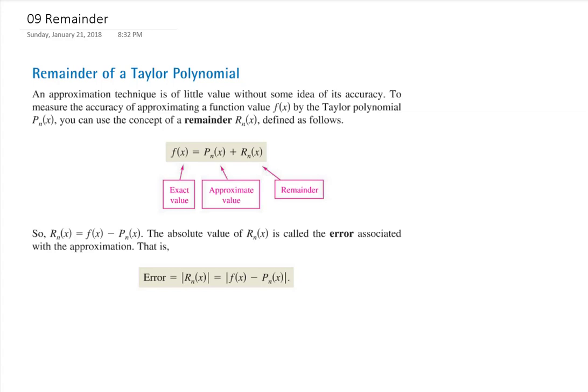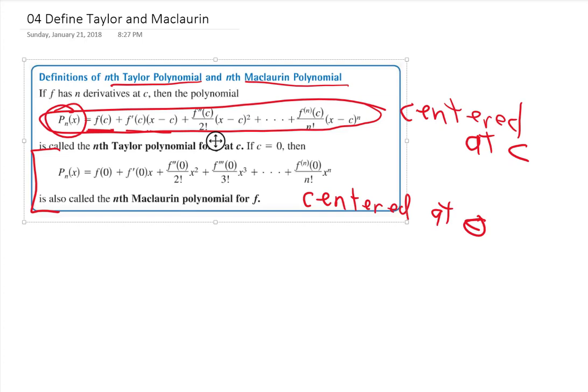On Monday, we developed Taylor polynomials and McLaurin polynomials. We found that they all follow this pattern: the function value at a particular point, plus the derivative at that point times x minus c, plus the second derivative over 2 factorial times x minus c squared, and so forth. That's a Taylor polynomial. If c happens to be 0, it simplifies to a McLaurin polynomial.